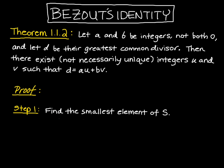The first thing we're going to do is start with a set S. So let set S be the set of all linear combinations of a and b. We're going to write that as S equals the set of all am plus bn, so the set of all linear combinations of a and b, where m and n are integers.